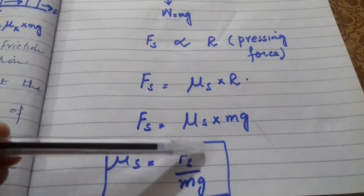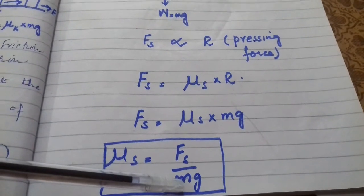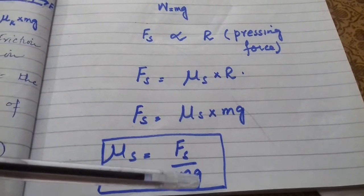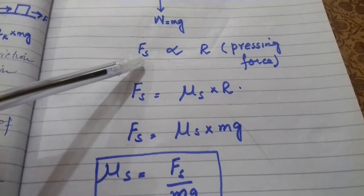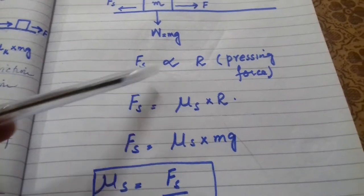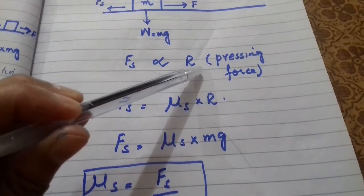It's the ratio of the force of limiting friction divided by the weight - or the pressing force, or the normal reaction. The maximum static friction force depends on the pressing force.